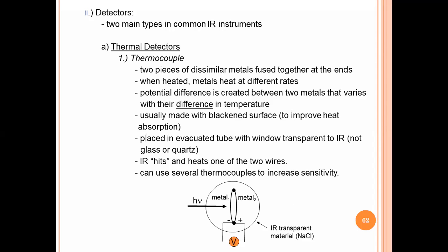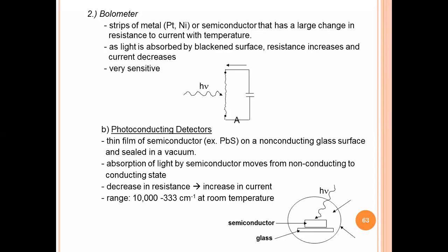Two dissimilar metals fused together, placed in an evacuated tube, not glass tube, along with windows transparent to IR radiations. This is known as the thermocouple detector. Then bolometer.